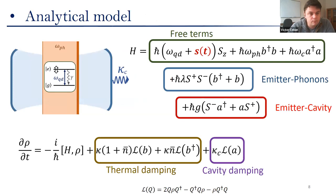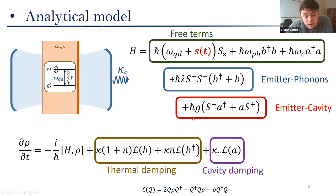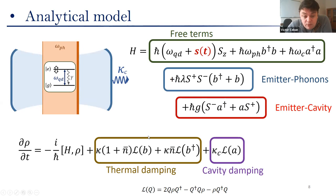The analytical model and the quantum dynamics are given by the Hamiltonian and its master equation. The Hamiltonian is built by the free term of the quantum dot, where we have inserted an additional term describing the modulation of the quantum dot transition, the free term of the mechanical resonator, the optical cavity, the interaction of the quantum dot with the phonons of the mechanical resonator, as well as the interaction of the quantum dot with the optical cavity. The master equation is described by the coherent part and the damping terms, where we've considered the thermal damping of the mechanical resonator as well as the cavity damping.